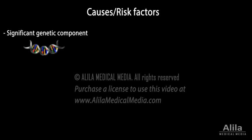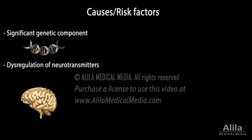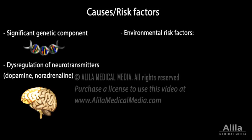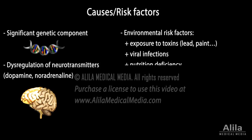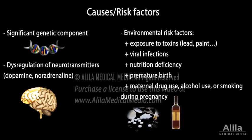ADHD has a significant genetic component. A child has twice the risk of developing ADHD if his or her sibling has it. The condition is associated with dysregulation of several neurotransmitters, including decreased dopaminergic receptors in the frontal lobe. Environmental risk factors include exposure to toxins, viral infections, nutrition deficiency, premature birth, and maternal drug use, alcohol use, or smoking during pregnancy.